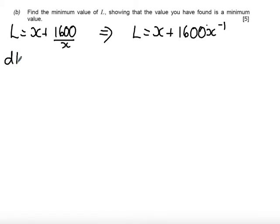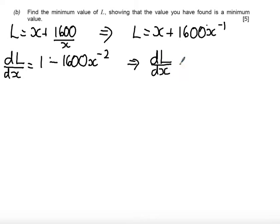Now if I differentiate this, I get dl by dx is equal to 1. And then multiply by the minus 1, so I get minus 1600 times x and decrease the power of 1 to the minus 2. And if it helps, because we're going to need to do some calculations with this, rewrite it as dl by dx equals 1 minus 1600 over x squared.